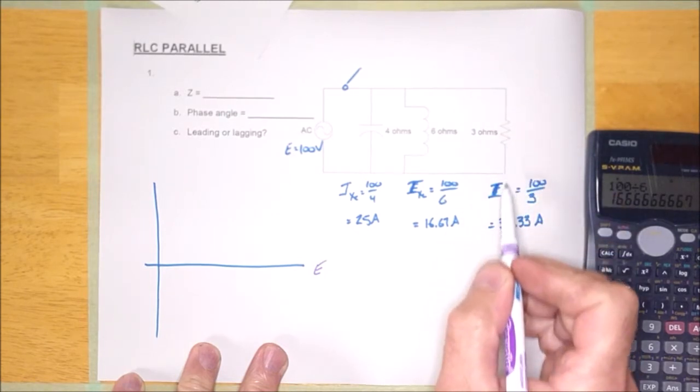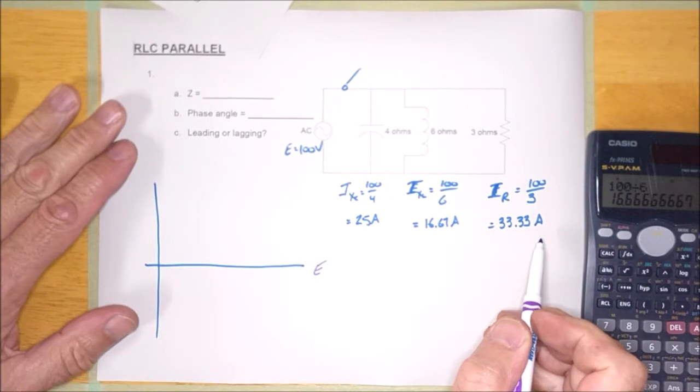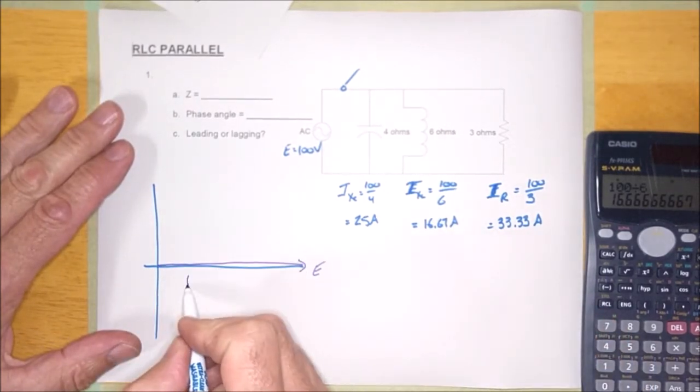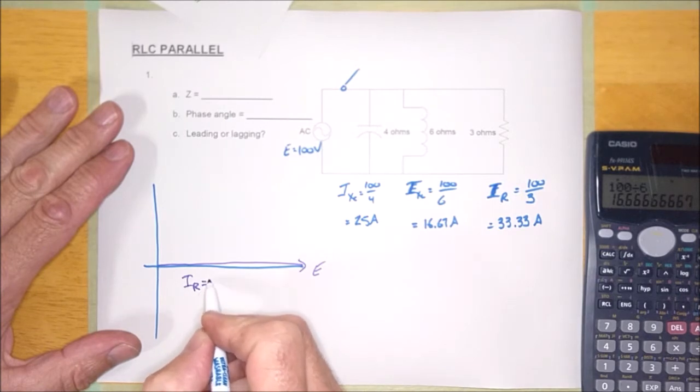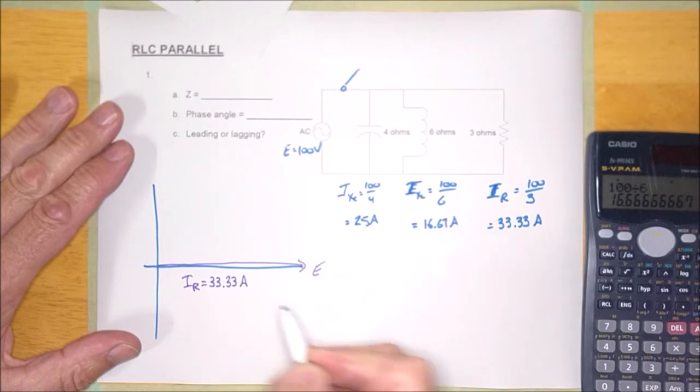Now this is a resistor. I'm going to draw it first. That 33.33 amps is in phase with the voltage because it is IR. There it is. IR is equal to 33.33 amps.